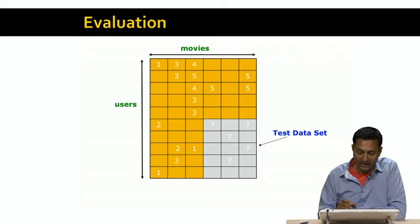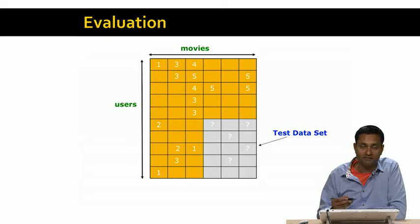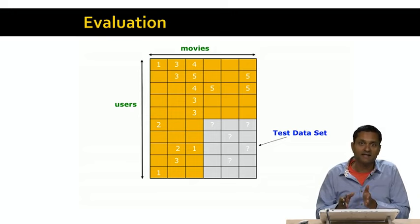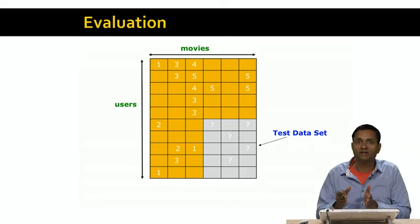And for the purposes of the algorithm, these are going to be treated as the same as unknown ratings, or the blank ratings. But in fact, we know what these ratings are. So we can use our algorithm to predict these ratings, and then compare them against the actual ratings and see how good the algorithm performed.